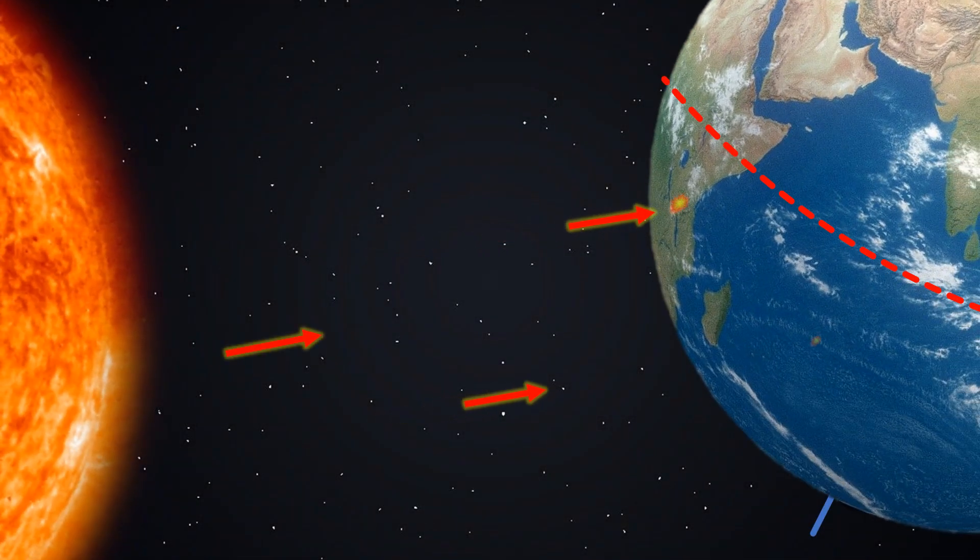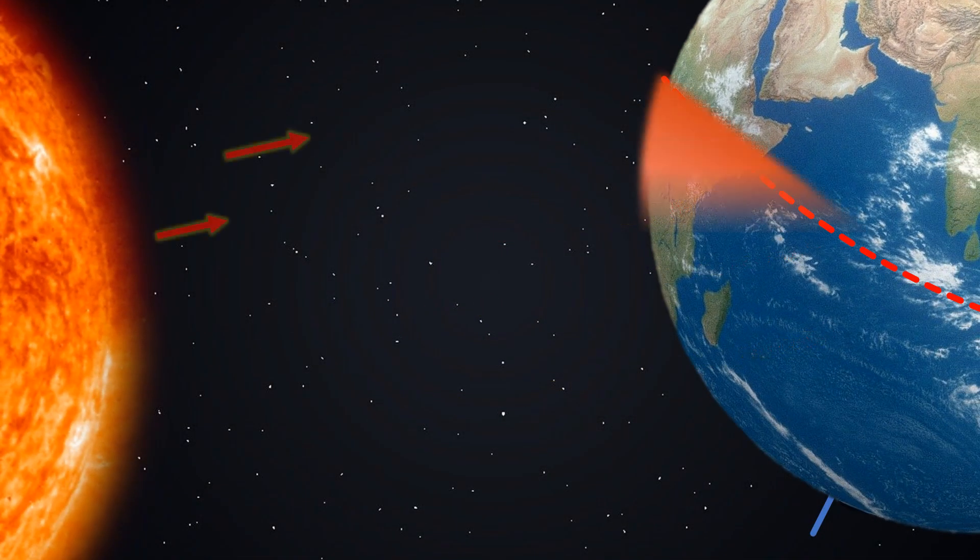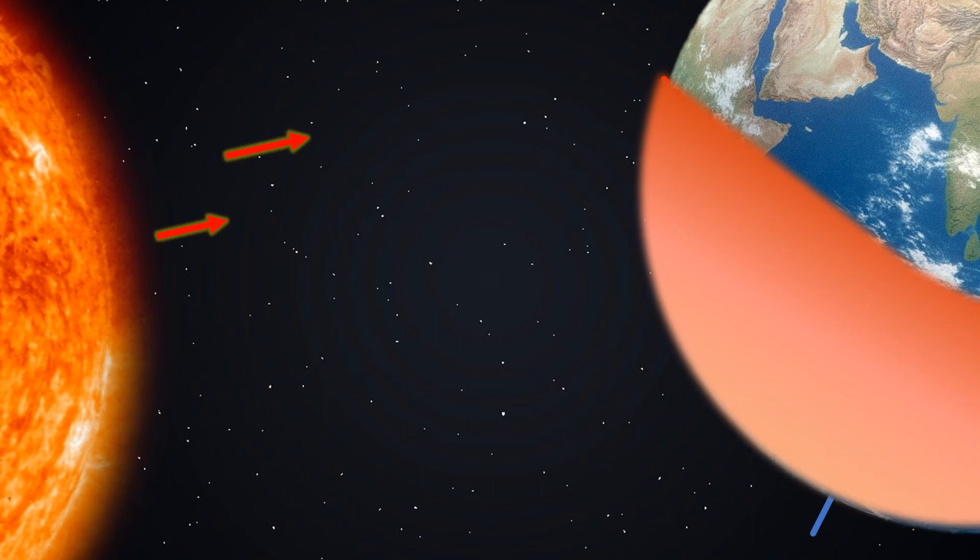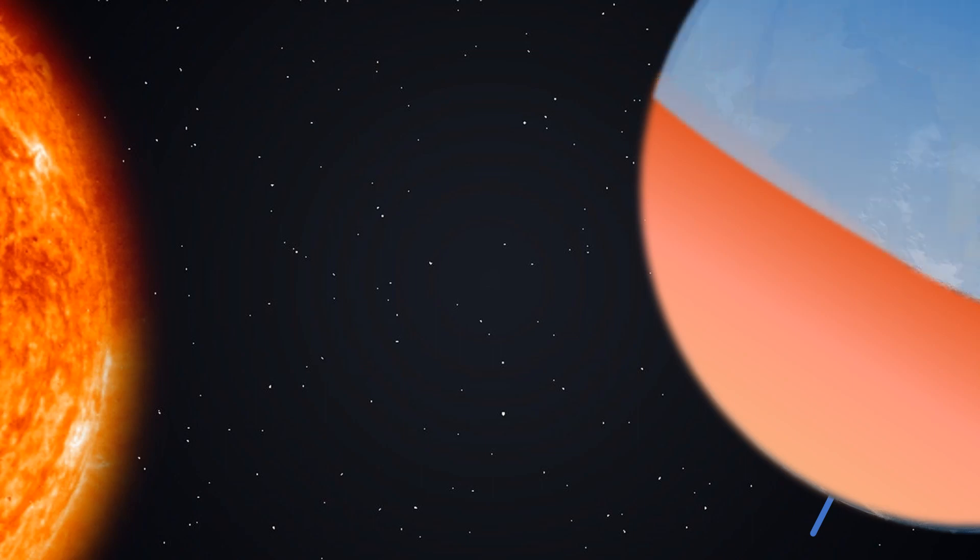This is because, due to the spherical nature of the Earth, the sun's rays do not fall proportionately in both hemispheres, and the northern hemisphere receives only slanting rays from the sun.